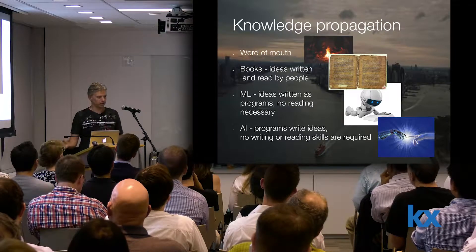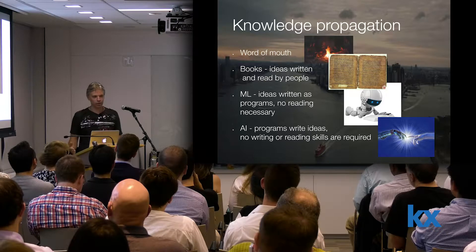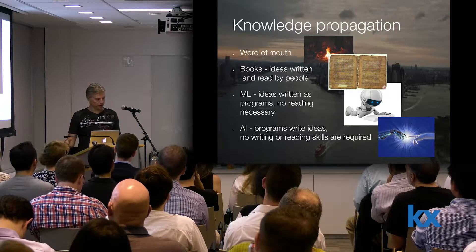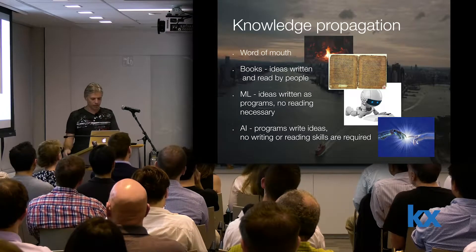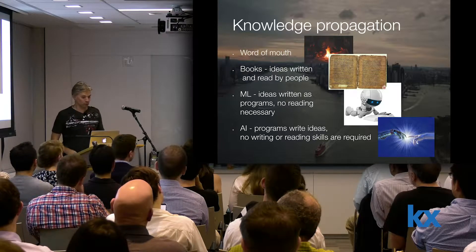But then books were invented and written literature emerged. Ideas became written down — you don't have to be in the same physical place; you can be far away from the person who expressed that idea. Then came machine learning, where ideas are written as programs and no reading is actually necessary because computers can do it for you. Before, you had to know the language and read it. Now you just have to know how to open your iPhone or iPad — you can just tell Siri what the weather is today. You don't even need to read. And then there are more fascinating AI programs that could possibly — we're not there yet — write ideas, where no writing or reading skills are required. You basically think of something and it happens.